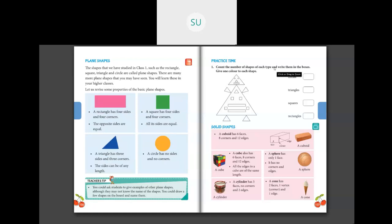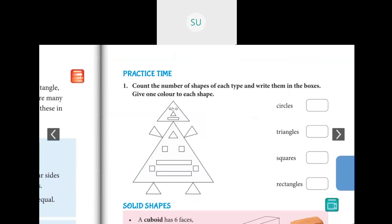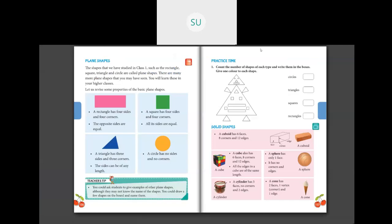Practice time! The first question says: count the number of shapes of each type and write them in the boxes, then give one color to each shape. Let's count circles first — the eyes of the figure are circles, so that's one and two. Number of circles is two. We can color the circles orange.